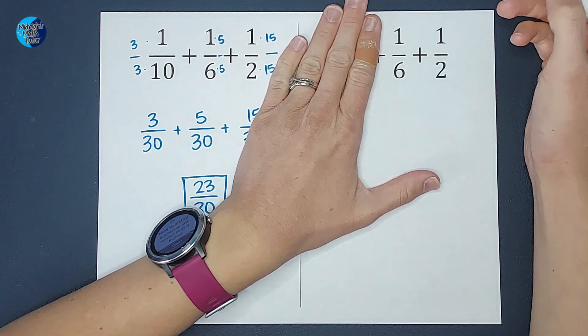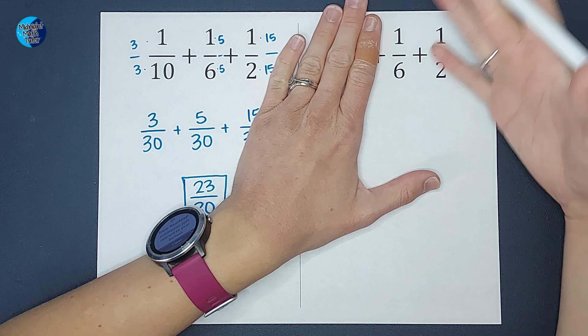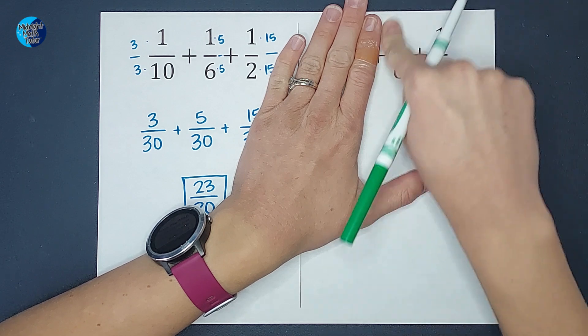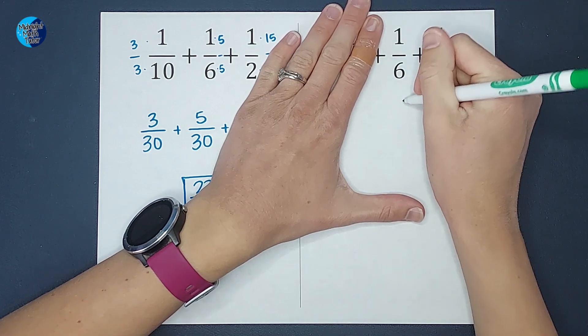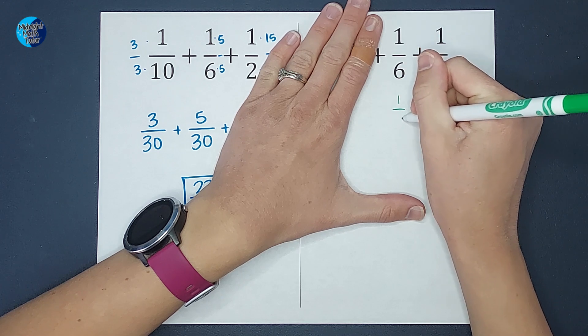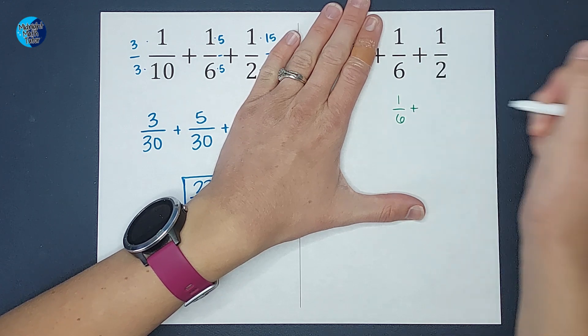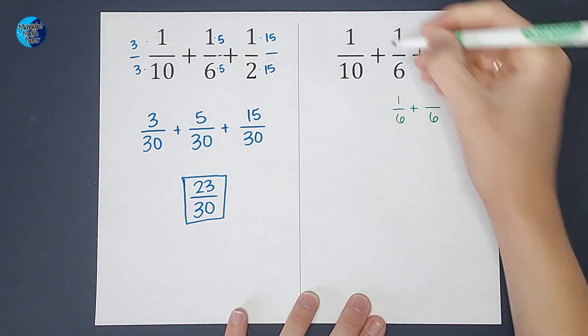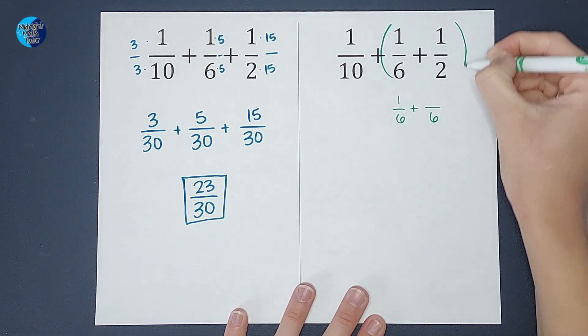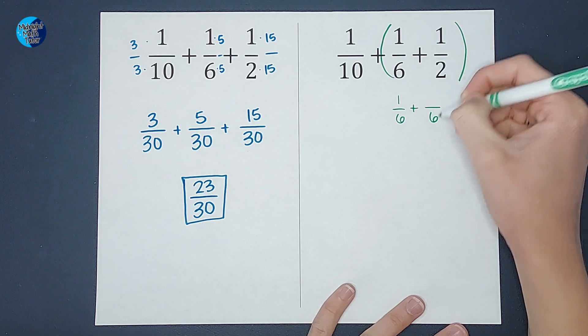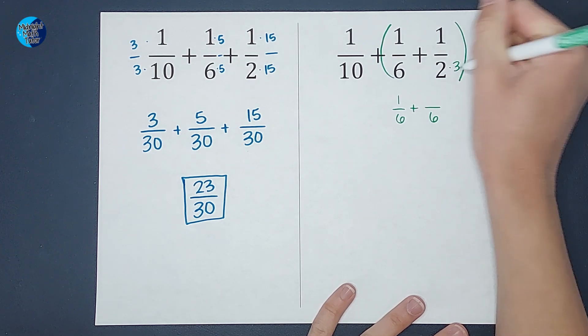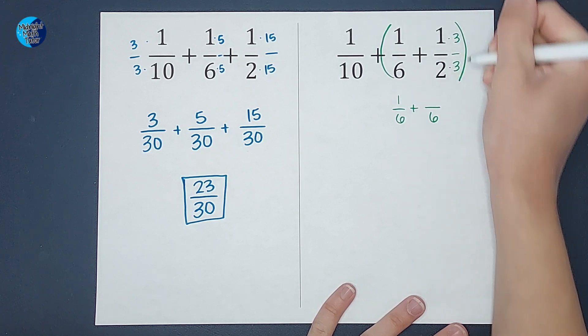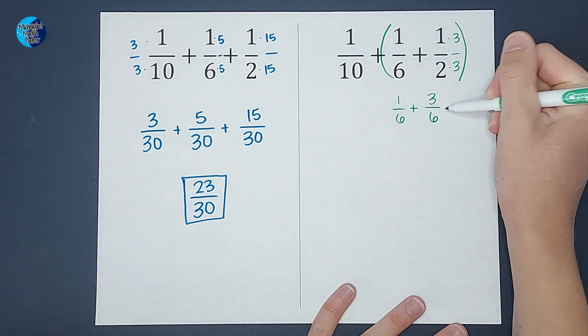So if I were just adding one sixth and one half, I ask myself, well, what's the smallest number they both go into? Well, it's six. So that means this guy doesn't have to change at all. So I'm going to keep that one one sixth. And then we're going to add a fraction that is equal to one half, but also has a denominator of six. I'm going to put parentheses around this to remember working with this first. So to get six on the bottom, I would multiply by three. But just like over here, if I multiply the bottom, I got to multiply the top. So one times three gives me three.